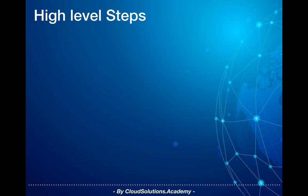Before we get started, let's look at the high-level steps that we would carry out as part of the lab to build and deploy a microservices application and create the production topology. It is assumed that you already have a Google project created. The first step is to create a VPC — virtual private cloud — to isolate all our network resources for the lab.